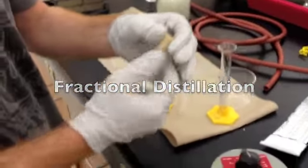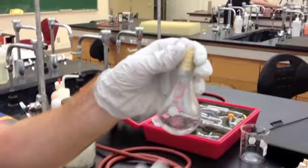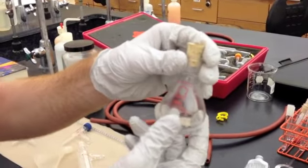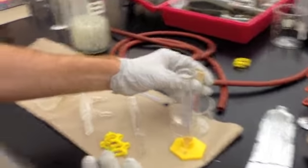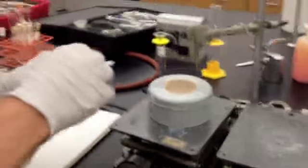Basically, you start with your solution or mixture, 30 milliliters of your mixture in a 50 milliliter round bottom flask, and you put it on the heating mantle, obviously turned off right now, and secure it with a two finger clamp.